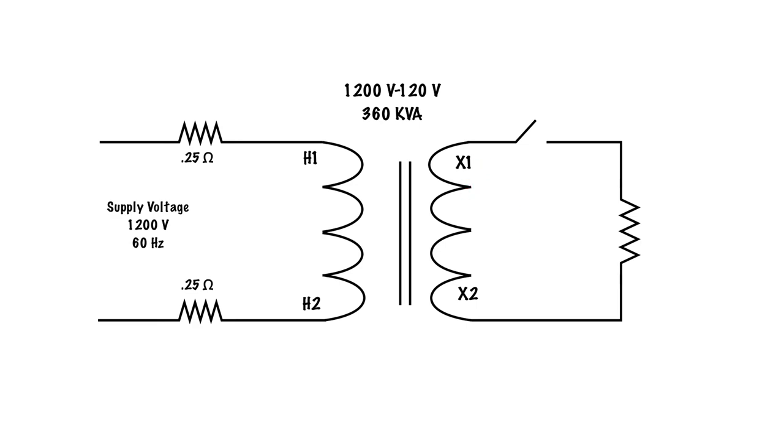Right now what we have is an open circuit on the secondary, which means we have no current flowing in the secondary. If there's no current flowing in the secondary, there's very minimal current flowing on the primary to the point where we call it negligible because it's exciting current or magnetizing, which is just basically 2% of what the rated primary current is. So we're just going to call that negligible at this point.